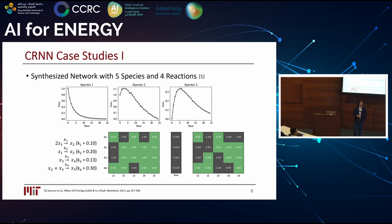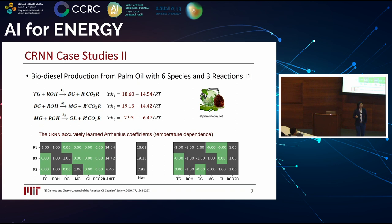The next case is biodiesel production from palm oil. Here, temperature becomes important because it's related to pyrolysis and reforming of the reactions. Not only the stoichiometric coefficients and rate constants can be reproduced, but also the sensitivity towards temperature — the activation energy — can be accurately captured within 1% error.